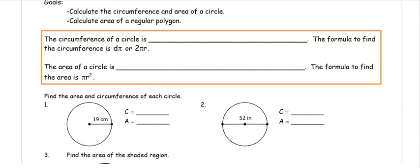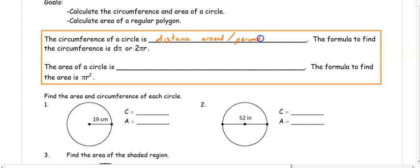The circumference of a circle is the distance around, or another way to think about it is the perimeter. To find the circumference, it is diameter times pi, or 2 pi r.